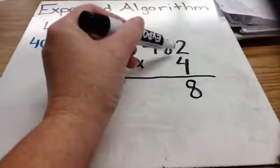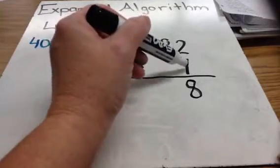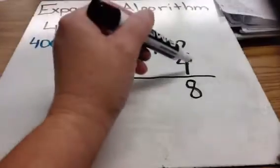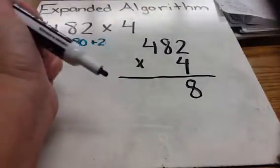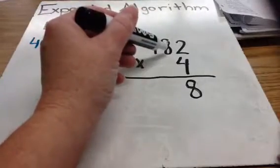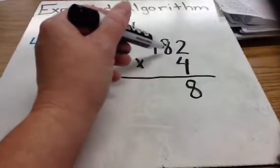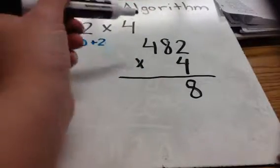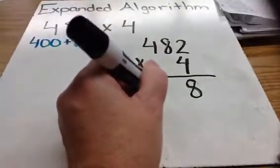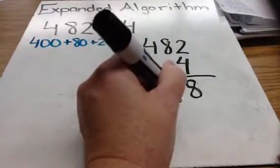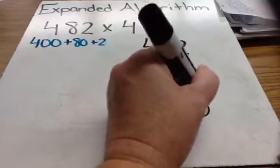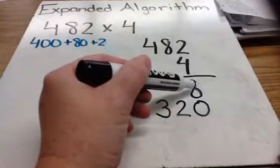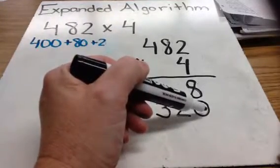Now I should multiply 4 times the number in the tens place — 4 times 8 tens. I know 8 tens is 80. 4 times 8 tens is different than just 4 times 8, although I can use my facts for 4 times 8. I know that 4 times 8 is 32, so it's easy to figure out that 4 times 80 is 320. I'm going to write that below the 8, making sure that I line up the 0 in my 320 with the 8, because those are both ones place numbers.